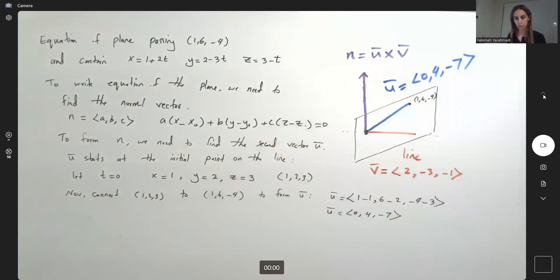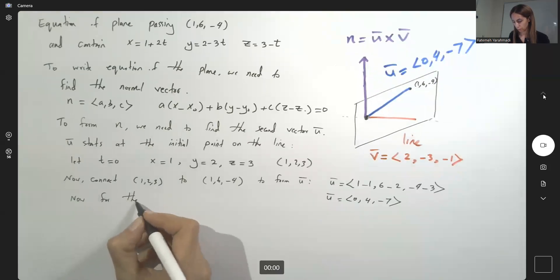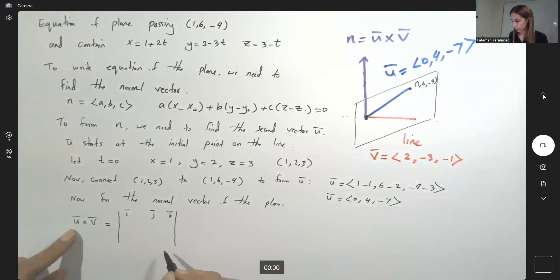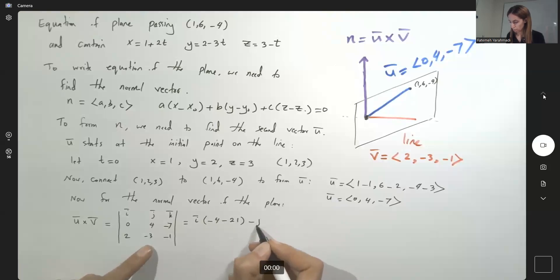Now for the normal vector of the plane, just find u cross v or v cross u. This is equal to i, j, and k. u is 0, 4, negative 7 and v is 2, negative 3, negative 1. i is multiplied by negative 4 minus 21, minus j times 0 plus 14, plus k times 0 minus 8. So the normal vector can be written as